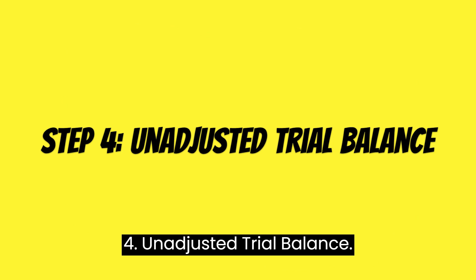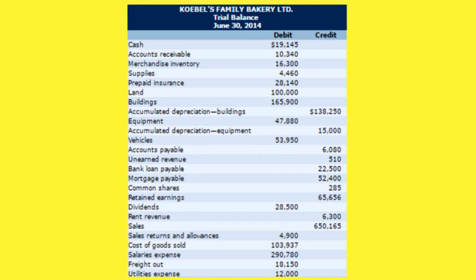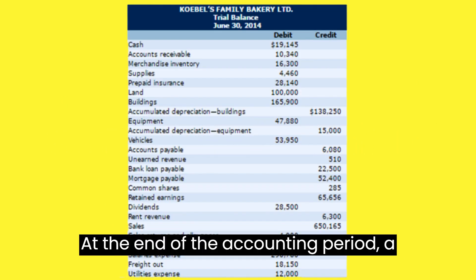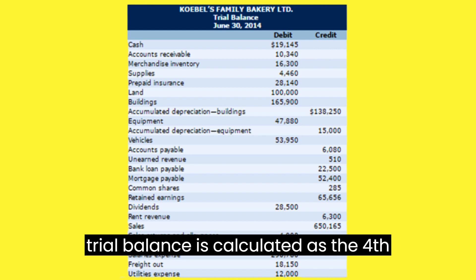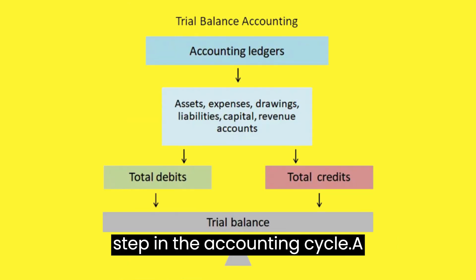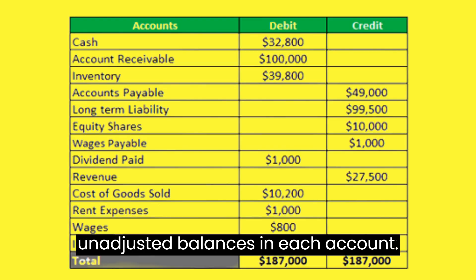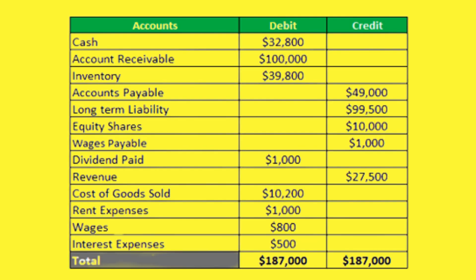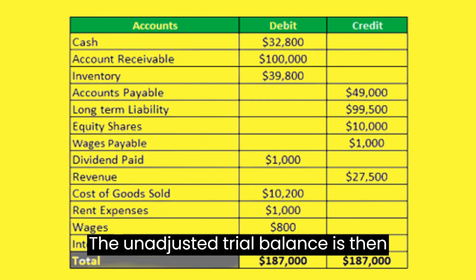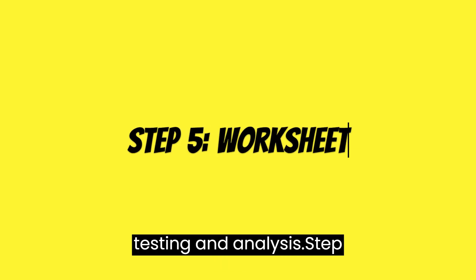Step 4: Unadjusted trial balance. At the end of the accounting period, a trial balance is calculated as the fourth step in the accounting cycle. A trial balance tells the company its unadjusted balances in each account. The unadjusted trial balance is then carried forward to the fifth step for testing and analysis.